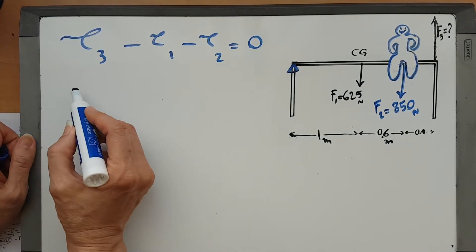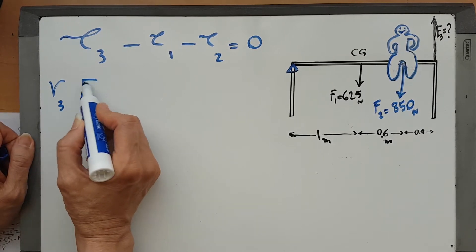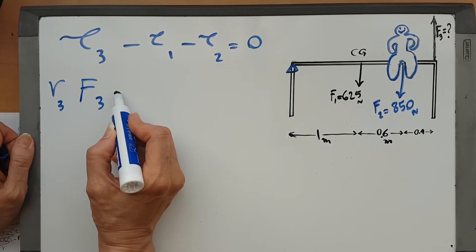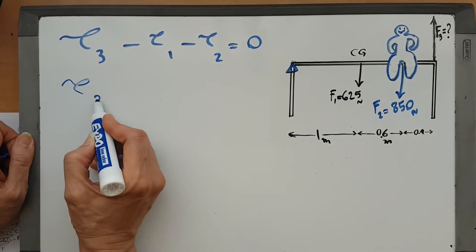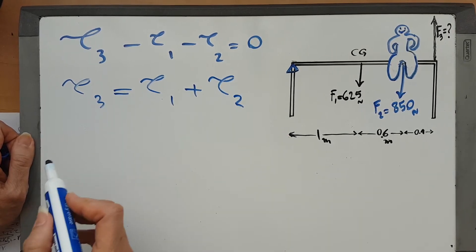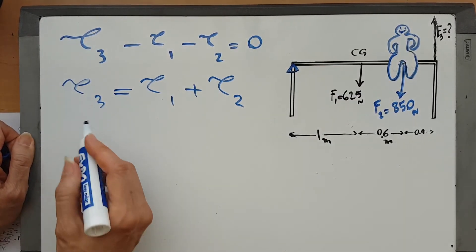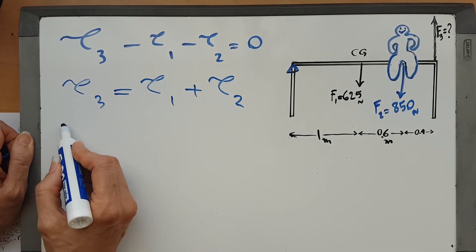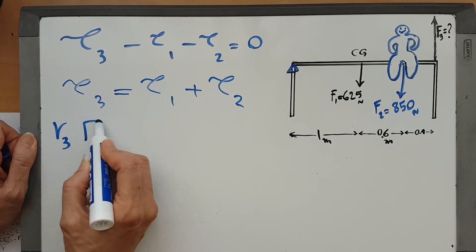Torque 3 must equal torque 1 plus torque 2. I take this to the other side of the equation and it becomes positive. So r3 F3 must equal r1 F1 plus r2 F2.